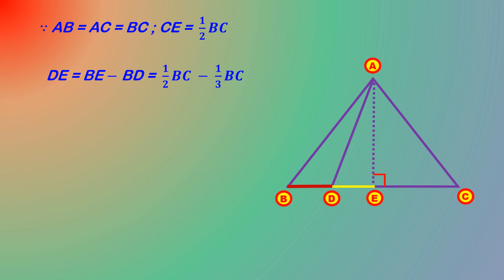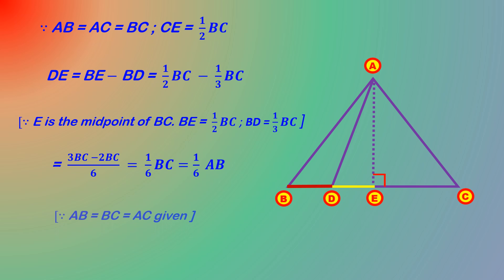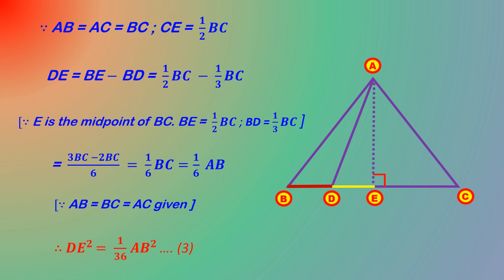Since E is the midpoint of BC, BE is equal to half BC. So DE equals half BC minus 1/3 BC, which equals 3BC minus 2BC all over 6, which equals 1/6 BC. Since AB is equal to BC, DE is equal to 1/6 AB. Therefore DE square is equal to 1/36 AB square — this is equation number 3.